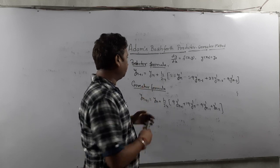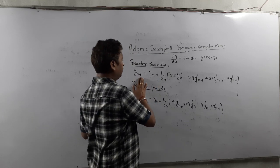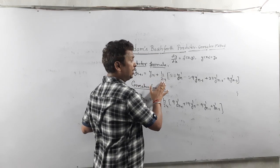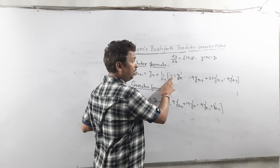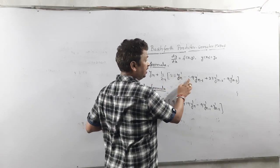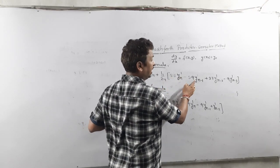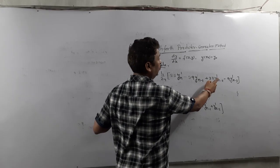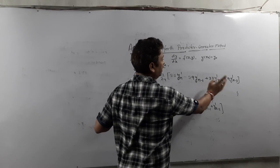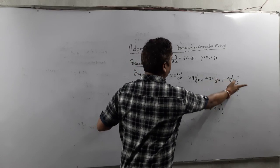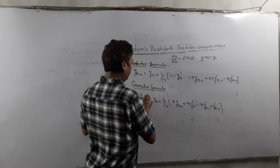So the predictor formula is: y(n+1) = yn + (h/24) × [55·y'n − 59·y'(n−1) + 37·y'(n−2) − 9·y'(n−3)].